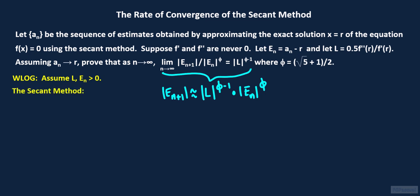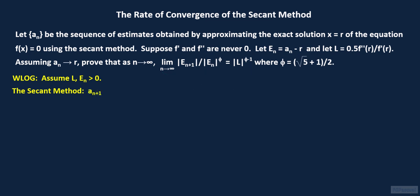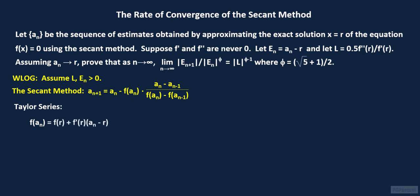Before we get started with the derivation, let us first review the secant method. If a sub n plus 1 is the n plus 1th estimate for the root x equals r, then a sub n plus 1 in terms of a sub n and a sub n minus 1 is given by this recursion. We expand f of a sub n using a Taylor polynomial of degree 2 around x equals r. f of a sub n equals f of r plus f prime of r times the quantity a sub n minus r plus 0.5 f double prime of r times the square of a sub n minus r plus the third degree error term.